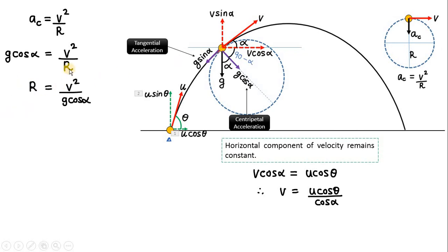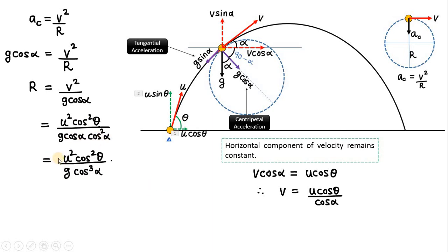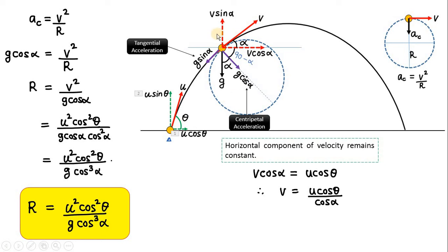Transposing, the radius of curvature r equals v squared divided by g cos alpha. Substituting v equals u cos theta divided by cos alpha, v squared becomes u squared cos squared theta divided by cos squared alpha. Multiplying the denominators, we get the radius of curvature equals u squared cos squared theta divided by g cos cubed alpha. This answer depends on three factors: the initial velocity u, the initial angle of projection theta, and the angle alpha made by the velocity vector at the point of interest.